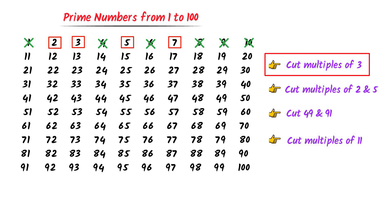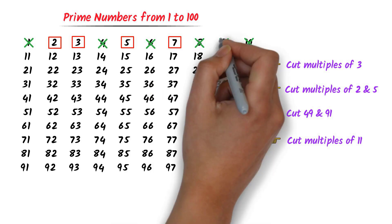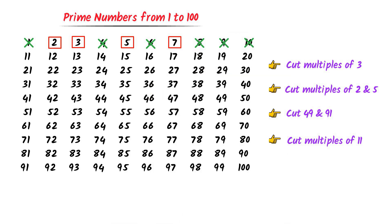According to Step 1, we cut the multiples of 3. Starting from 3, I count every 3 numbers and cut that number. Using this pattern, I cut every third number throughout the entire grid from 1 to 100.